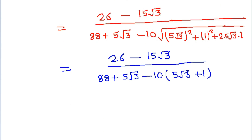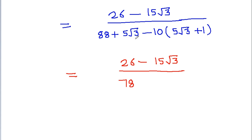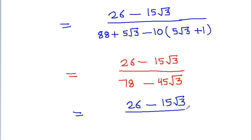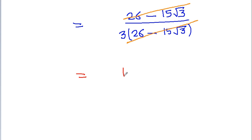Now substituting back, we get (26 - 15√3)/50 + 38 + 5√3 minus 10 × (5√3 + 1). Expanding: 88 - 10 = 78 and 5√3 - 50√3 = -45√3, giving 78 - 45√3 = 3(26 - 15√3). So the full expression becomes (26 - 15√3) / (3(26 - 15√3)), and 26 - 15√3 cancels, giving 1/3, which is a rational number.